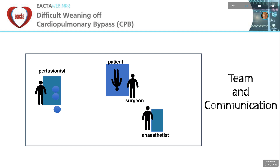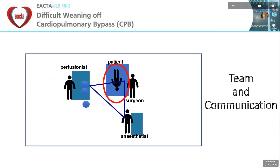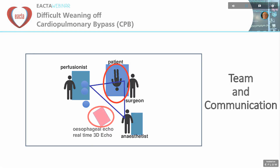Above all, we need to include the echo images in our communication, which is best facilitated by sharing the screen with images — ideally including real-time 3D images — between perfusionists, surgeon, and anaesthetists. These echo images, in addition to the view of the patient's heart in the open chest and cardiovascular pressures and ECG on our monitors, are the key to optimising expected difficult to wean variables. In addition, the echo images help us to diagnose unexpected difficult to wean variables.